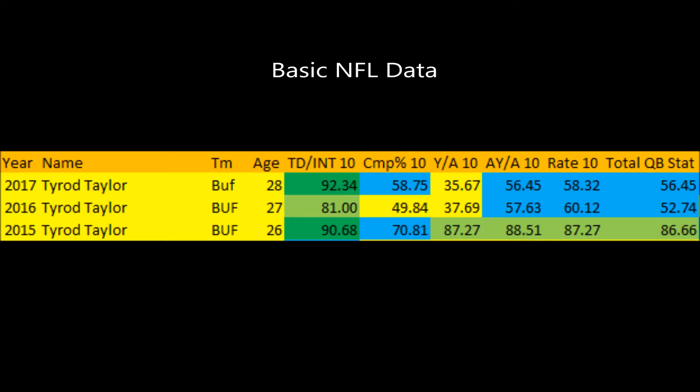Now looking at his actual NFL production — this data covers his touchdown-to-interception ratio compared to the NFL, completion percentage compared to the NFL, yards per attempt, adjusted yards per attempt, quarterback rating, and the total QB stat score, which takes into account touchdown-to-interception ratio, completion percentage, and strength of schedule. Based on this information, Tyrod Taylor had a very promising 2015 season. In 2016, he started to dip a bit — his completion percentage was basically average, yards per attempt was mediocre, and his adjusted yards per attempt and quarterback rating were not exactly flashy.